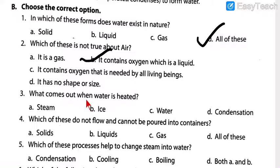Moving on to number three: what comes out when water is heated? When you keep water in a pan and heat it on the stove, what comes out after water starts boiling? Obviously steam — the vapor comes out. So steam is the correct answer. That is option A.